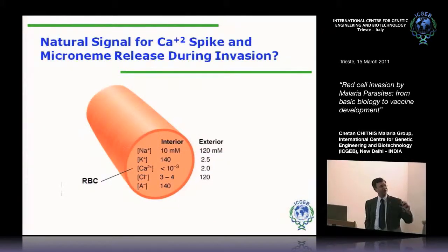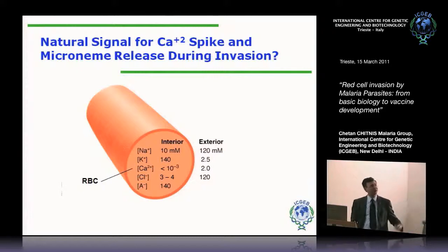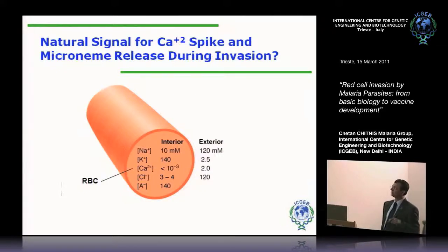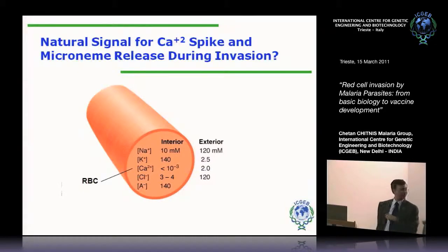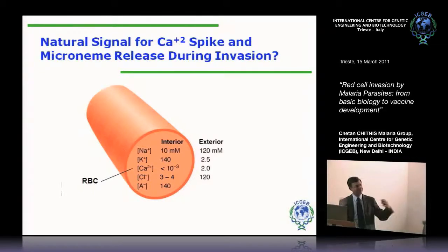We have artificially triggered a calcium spike — but what is the natural signal during invasion that will lead to a calcium spike and release of microneme proteins? One thing that's very different when the merozoite is inside a red cell versus outside is the ionic concentrations. Inside a red cell, as in any cell, you have low sodium, high potassium, very little calcium. Whereas in plasma or media you have the reverse: high sodium, low potassium, and millimolar calcium. We wondered when the merozoite comes out, does it sense the ionic environment, and does that lead to a calcium spike triggering microneme release?